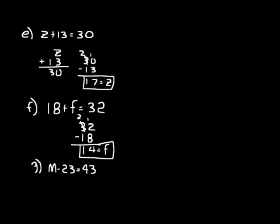Look at this problem: M minus 23 equals 43. We're trying to find the larger number of that difference, so if we add 23 and 43 together we can figure out what M is. Let's do that — rewrite vertically: 23 and 43. 3 plus 3 is 6, 4 plus 2 is 6. So M equals 66. You can check: does 66 minus 23 equal 43? Yes, it does.